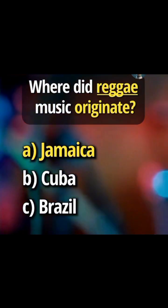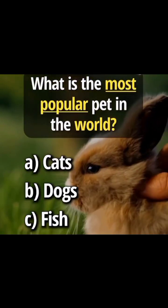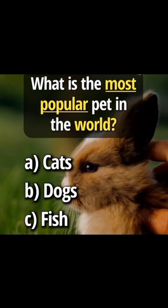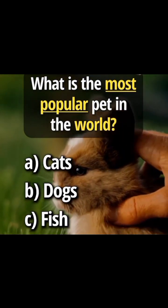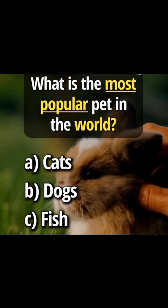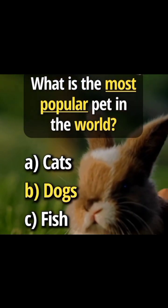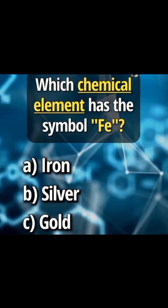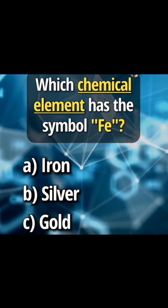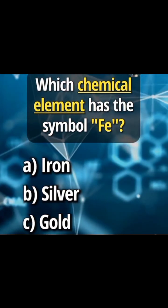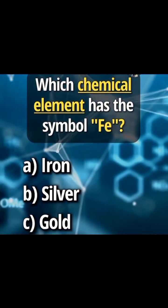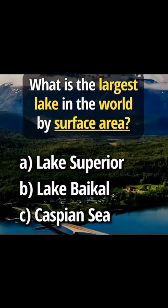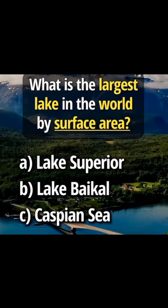Answer A: Jamaica. What is the most popular pet in the world? Answer B: dogs. Which chemical element has the symbol Fe? Answer A: iron. What is the largest lake in the world by surface area?